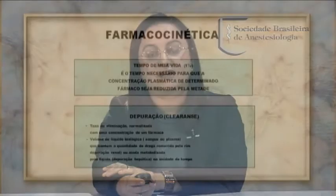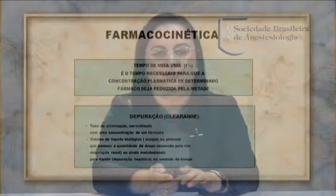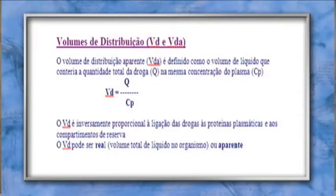Modelos matemáticos são empregados na farmacocinética para explicar, em função do tempo, os parâmetros relacionados. Entre eles, o tempo de meia-vida — tempo necessário para que a concentração plasmática de determinado fármaco seja reduzida pela metade — e a depuração (taxa de eliminação), que é o volume do líquido biológico que contém a quantidade da droga removida, seja pelo rim, seja pelo fígado, por unidade de tempo. Também se destaca o volume de distribuição, que é o volume do líquido contendo a droga na mesma concentração do plasma, inversamente proporcional à taxa de ligação de proteína nos compartimentos de reserva.